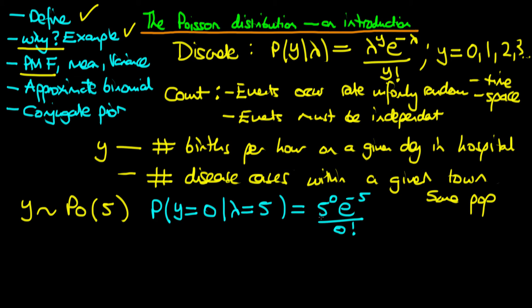Using our formula, this is just five to the power zero times e to the power minus five, divided by zero factorial. We note that five to the power zero is one, and zero factorial is also one. So this simplifies to e to the power minus five, which equals one over e to the fifth. Since e is roughly three, three to the fifth is a large number, so this is a very small probability.